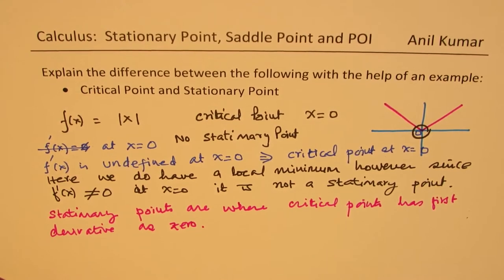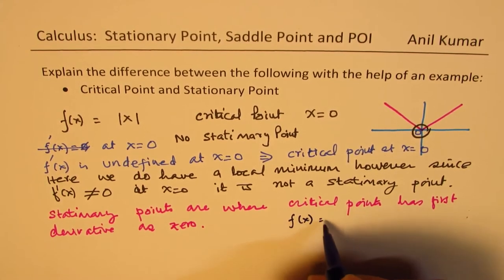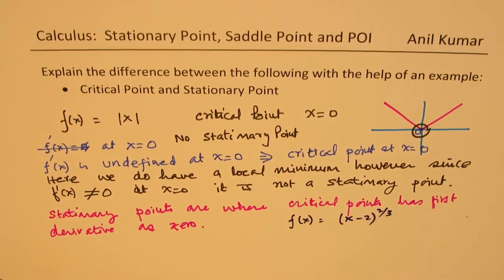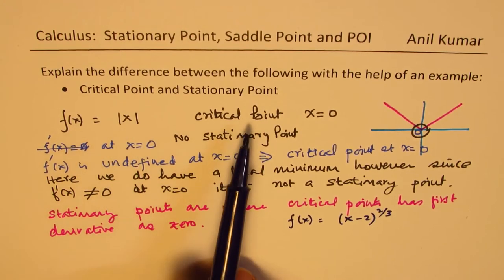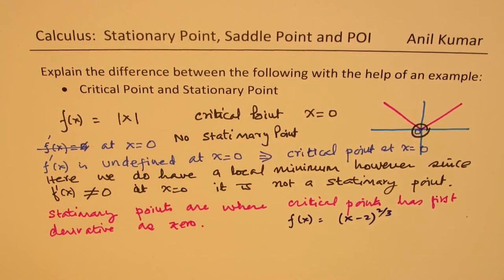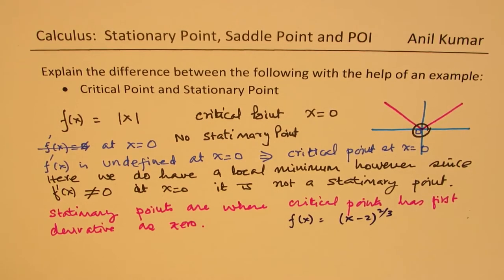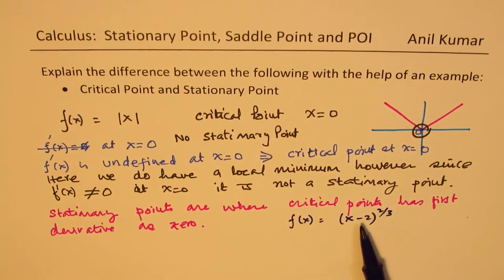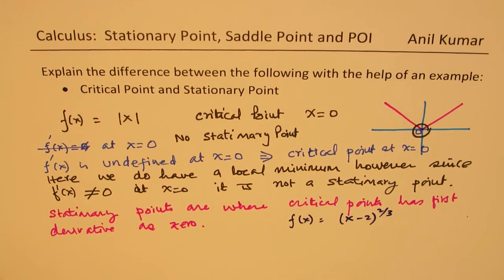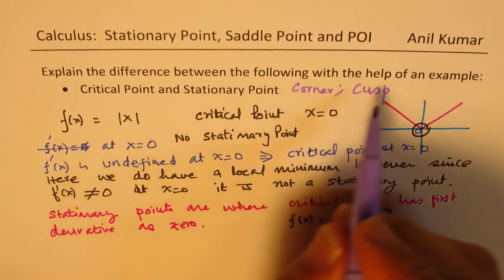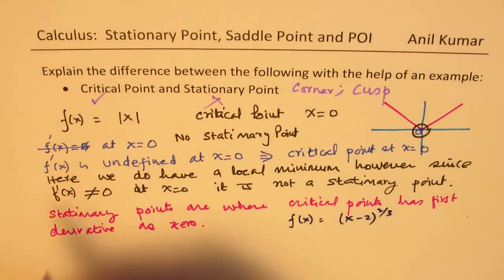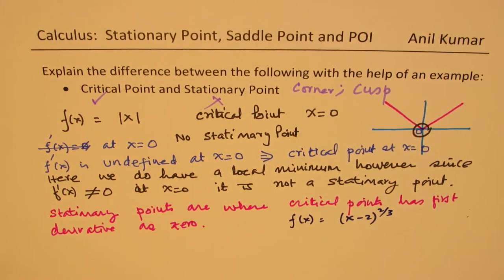Another example could be f of x equals x minus 2 to the power of two-thirds. Those kinds of radical functions, or absolute-type functions, may be continuous with a critical point. However, they will not have a stationary point. This graph will have a cusp — a corner. So wherever we have a corner or a cusp, we have a critical point but we do not have a stationary point.